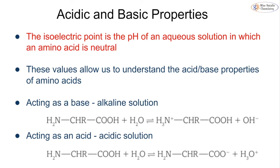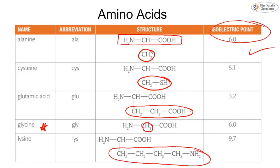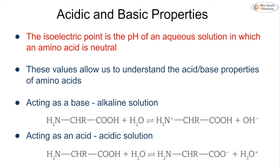When we discuss the isoelectric point, looking back at that table we can see different values: 6, 5.1, 3.2, 6, and 9.7. These numbers actually refer to a pH — it is the pH of an aqueous solution in which an amino acid is neutral. These values help us understand the acid-base properties of amino acids: whether it is going to have more acidic properties or more basic properties.